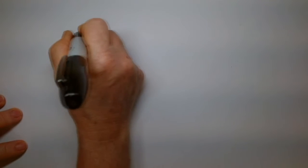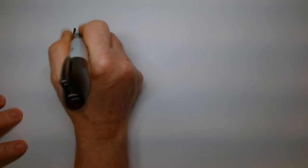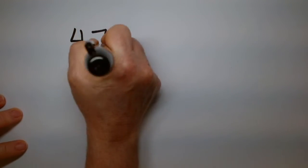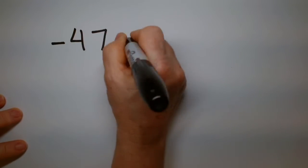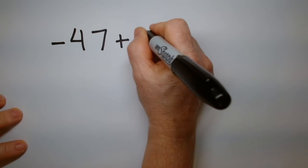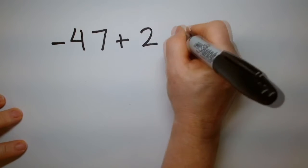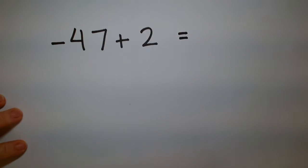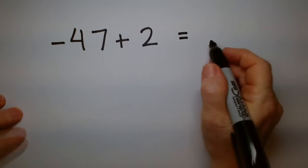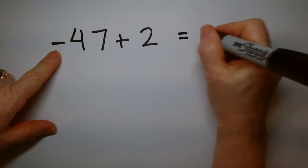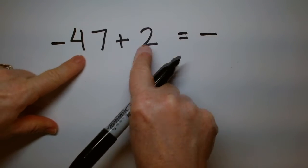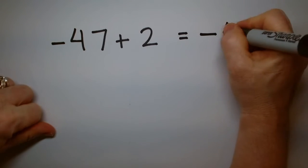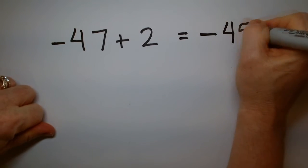Imagine you've got a number like negative 47 plus 2. What is that? 47 is much bigger than 2, so we know it's negative. The difference between 47 and 2 is 45, so the answer is negative 45.